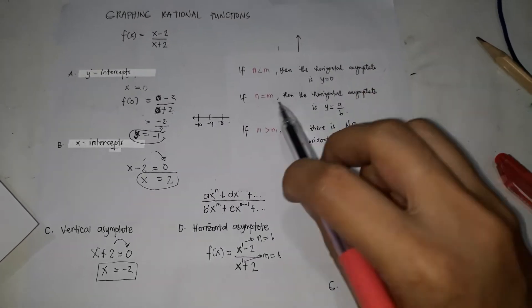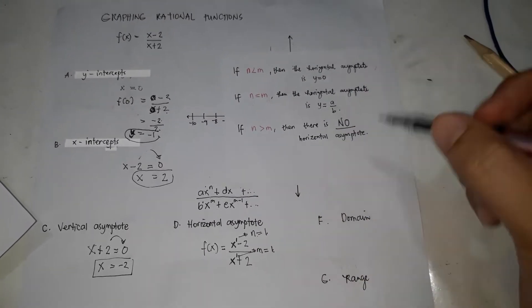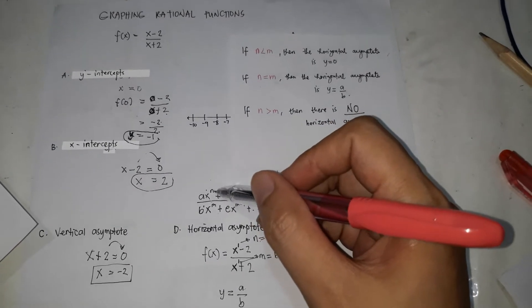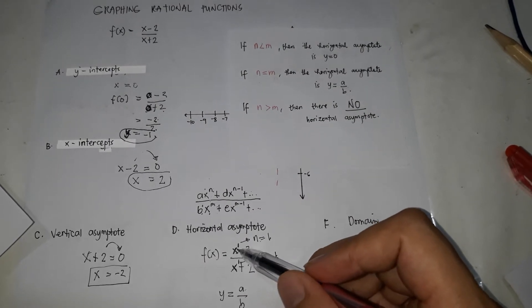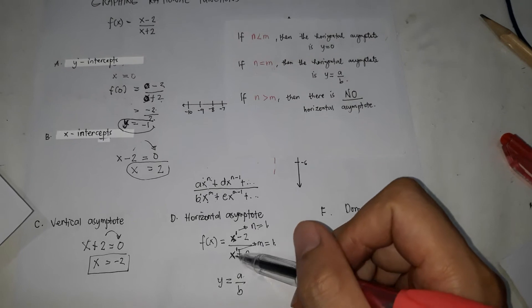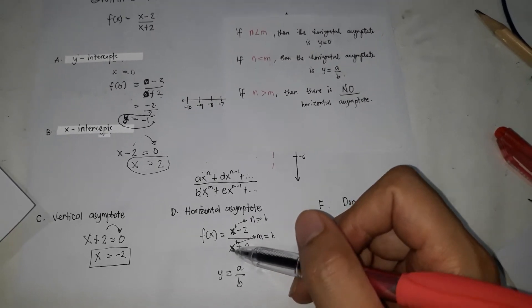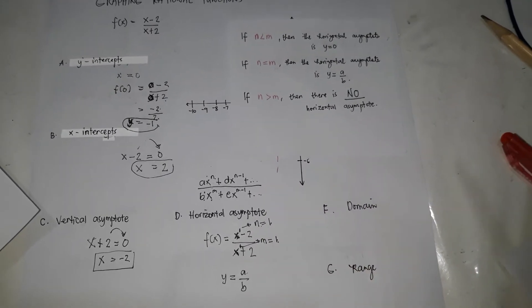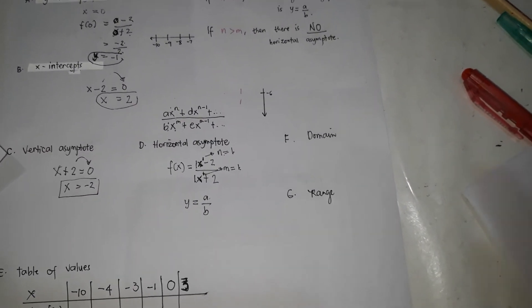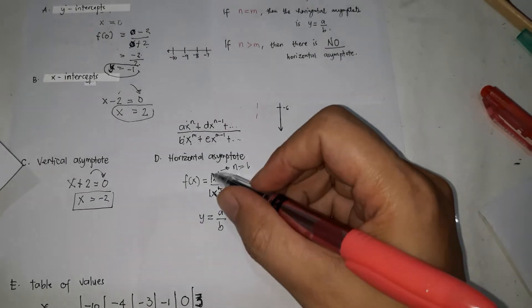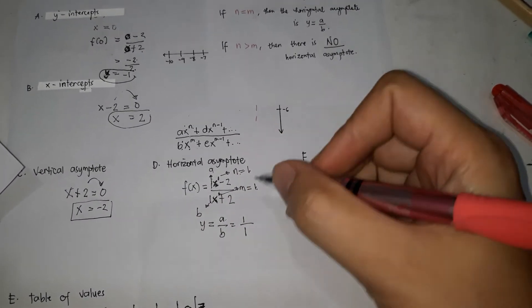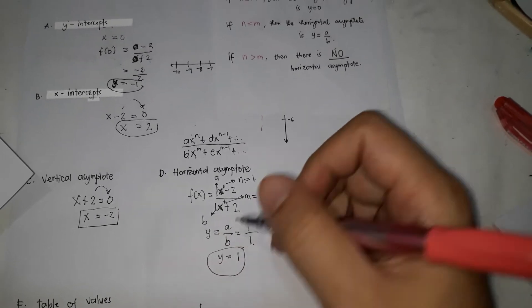Since n equals m, according to our rule, the horizontal asymptote is y equals a over b. Here, a is the coefficient of x with the highest exponent in the numerator, and b is the coefficient of x with the highest exponent in the denominator. Since there is no written coefficient beside x, it is understood to be 1. So a equals 1 and b equals 1, giving y equals 1 over 1, which equals 1. That is our horizontal asymptote.